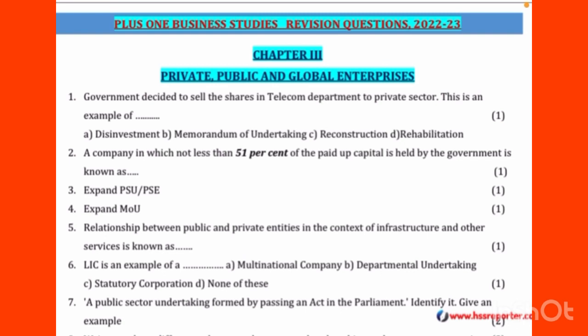The options are: Memorandum of Undertaking, Reconstruction and Rehabilitation, or Disinvestment. The answer is: selling shares of a Public Sector Enterprise to the Private Sector is called disinvestment. Option A is the right answer - disinvestment.